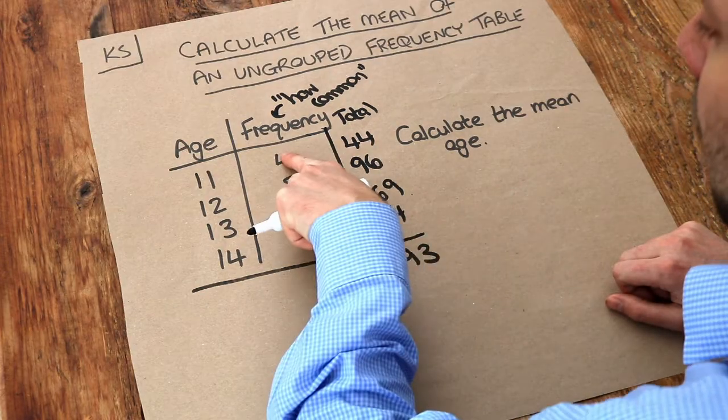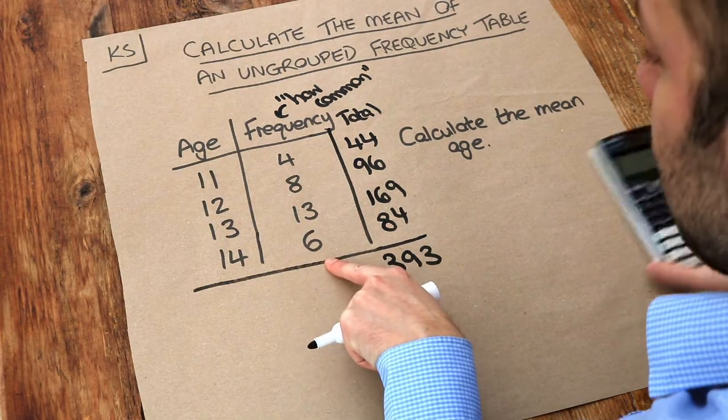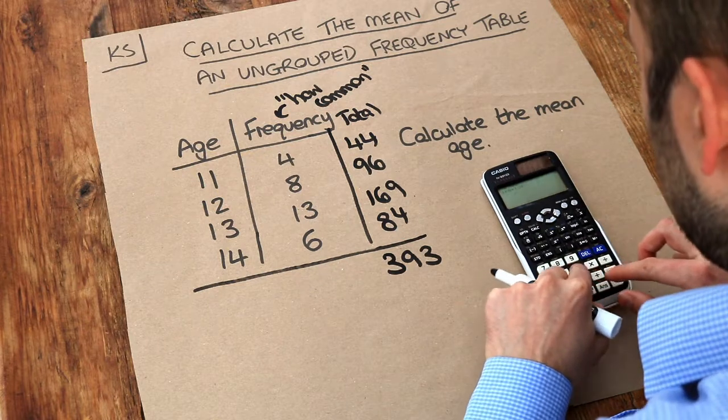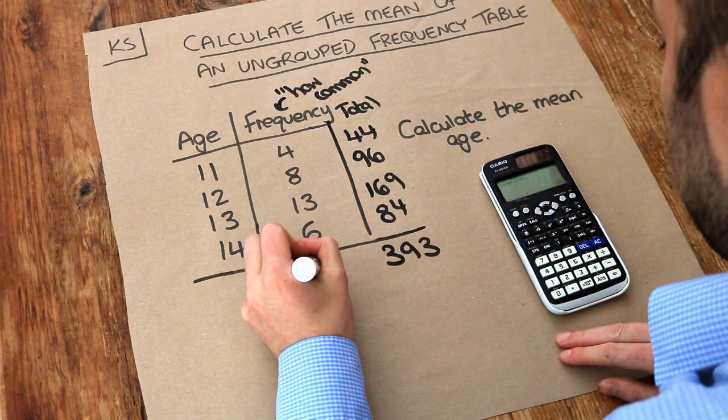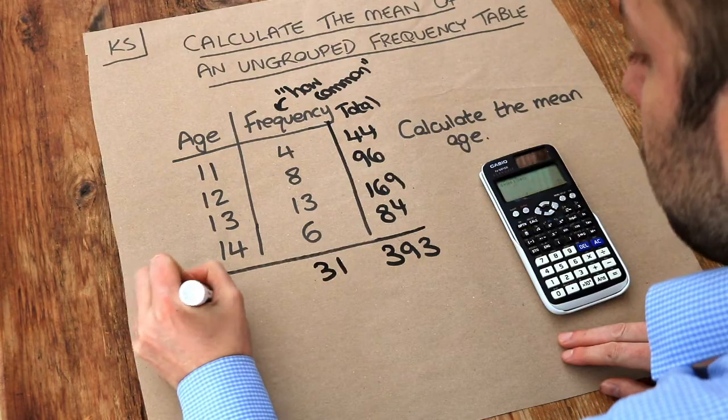Now the total number of people we have is the total frequency. So we just add the 4, 8, 13 and 6 and that gives us a sum of 31. I could call this the total row if I wanted to.